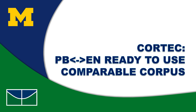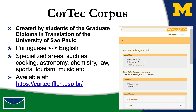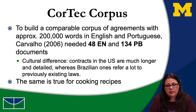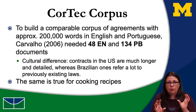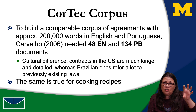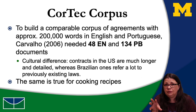One example of comparable corpora put together by other people and now available for consultation is the CoreTech corpus, available on the website noted here. In this case, the comparable corpora available there have about 200,000 words in each language — English and Portuguese. But that doesn't mean they are always similar in the same features. For instance, Carvalho (2006), to put together a 200,000-word comparable corpus of commercial agreements, had to use 48 English agreements and 134 agreements in Portuguese.